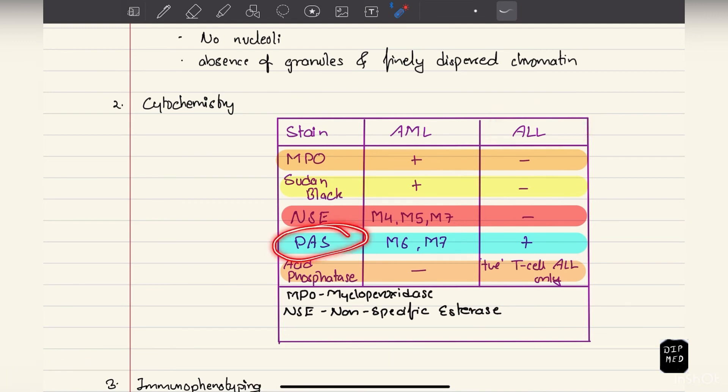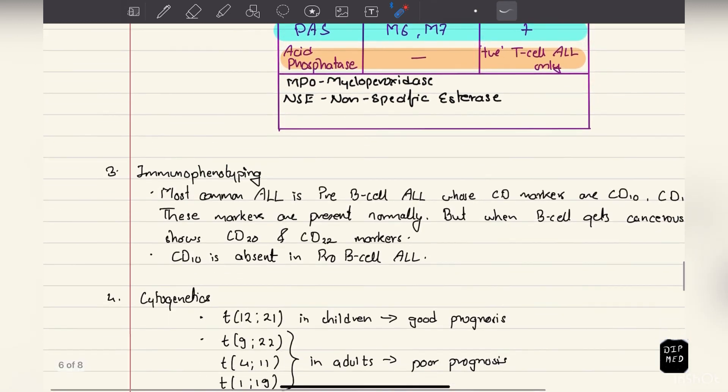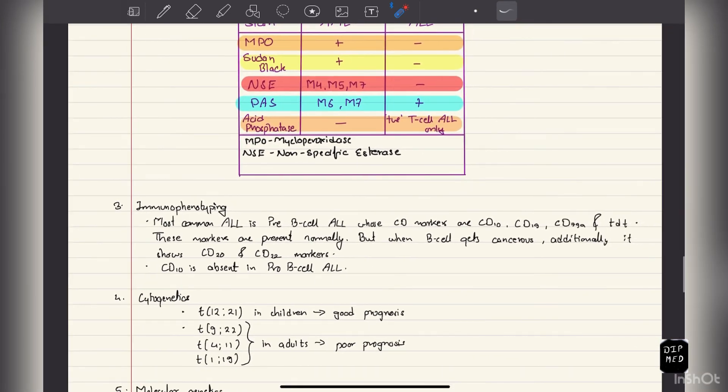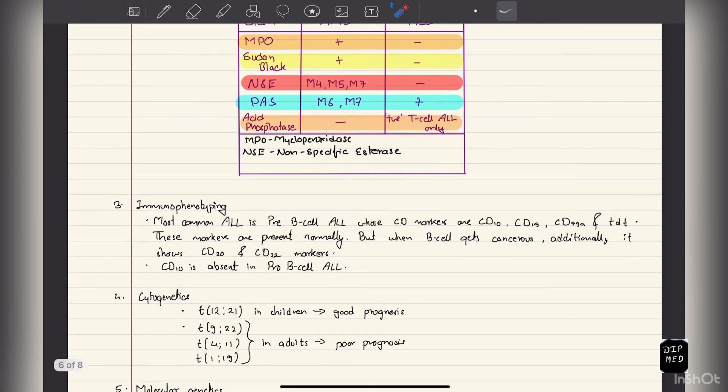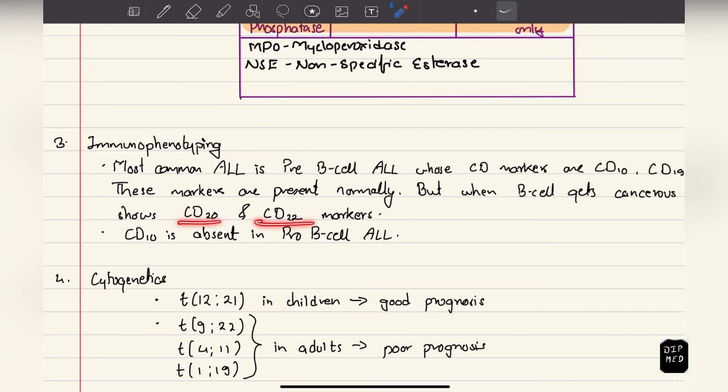In cytochemistry I've already explained: ALL lymphoblasts have positive PAS stain, and T-cell have positive acid phosphatase. Immunophenotyping: since pre-B cell ALL is the most common, we have to look for the CD markers of these B cells, which includes CD10, CD19, CD79a, and TdT. These markers are present normally, but if they get cancerous, additionally they can show CD20 and CD22. CD10 is absent in pro-B cell ALL.